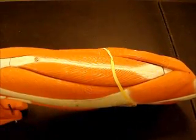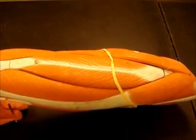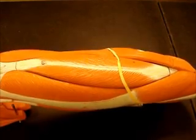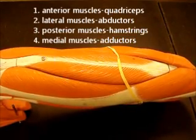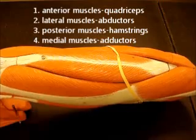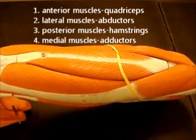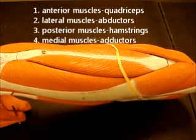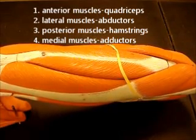Now we're going to do the leg. I like to break the leg up into groups of muscles. You have two main groups: one group on the front, the anterior muscles, and one group on the back, the posterior muscles. These are your extensors and your flexors of the knee, and there are four things in each group.